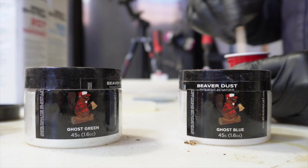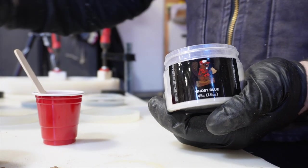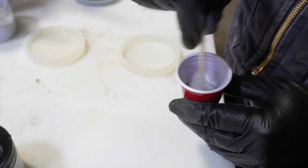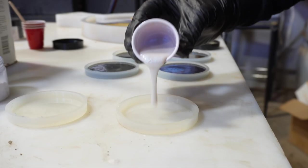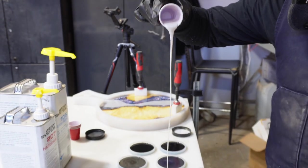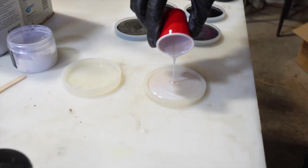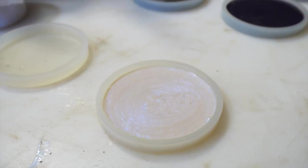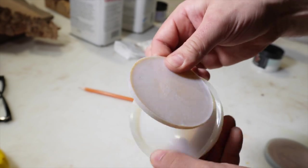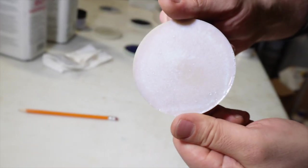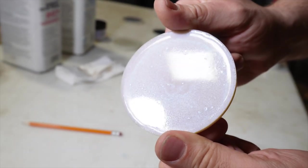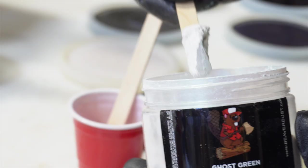Next up, we're going to mix up some ghost green and ghost blue on their own and pour that, so you can see how these pigments look when they're used all by themselves. Typically, when used by themselves, it can have a slightly underwhelming effect. It's just got a shimmer of blue or green or whatever that ghost color is that you're using. So some people like it, some people don't like it, but it's a good way to get just a shimmer of color in an otherwise sort of white or pearl-looking pour.